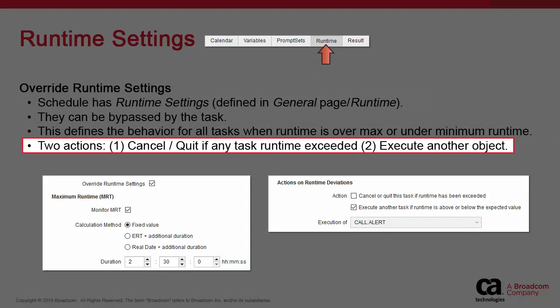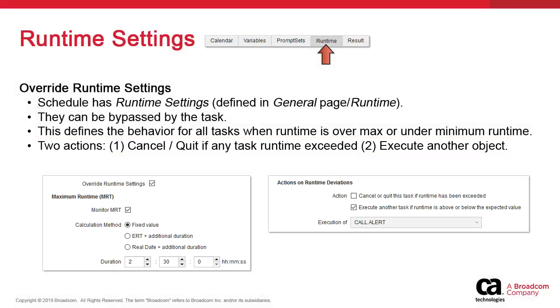Let's imagine a backup job that should take at least one hour and should not take more than five. You have the option of cancelling a task, which interrupts it if it runs for more than the stated maximum time. The second option lets you execute another object — presumably a notification — if the task runs for less than the minimum, say one hour, or more than the maximum, say five hours.